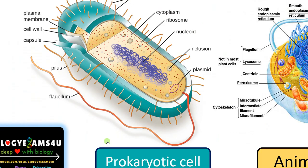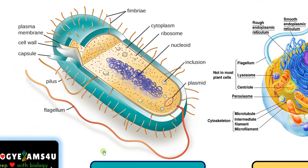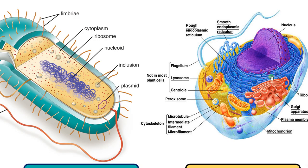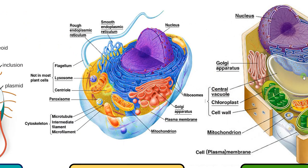The second structure is cytoplasm. Cytoplasm is a fluid matrix or the floor of the cell where all organelles or all structures are embedded. It is present in all types of living cells like prokaryotic cell, animal cell and plant cell.